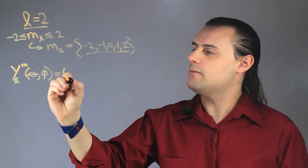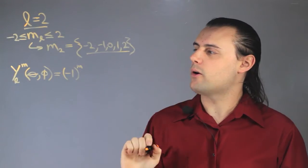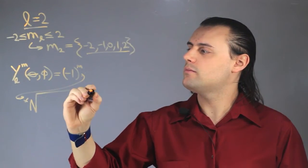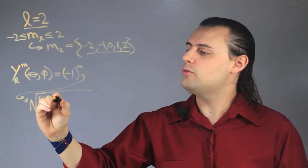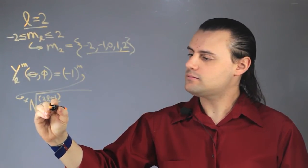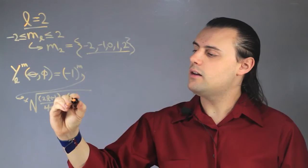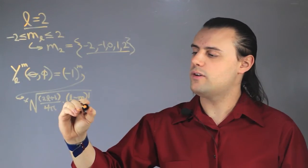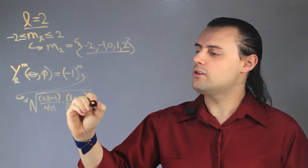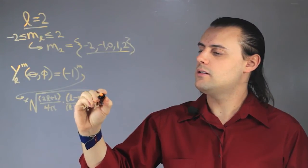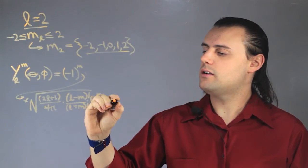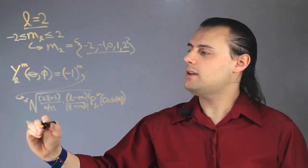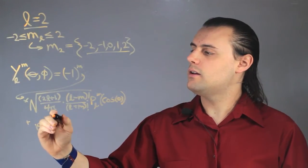And it depends on the polar angle theta and the azimuthal angle phi. And so, the spherical harmonic is given by negative 1 raised to the power M times the square root of 2L plus 1 divided by 4 pi times L minus M factorial divided by L plus M factorial, times the Legendre polynomial P sub L minus M cosine of the angle theta, the polar angle, times E raised to the IM phi.